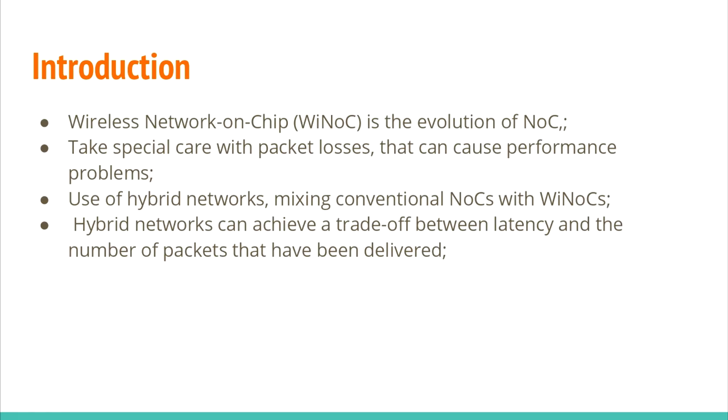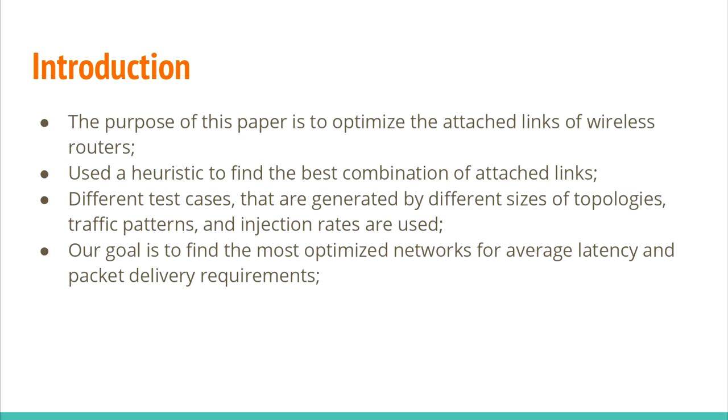Wireless network on chip is the NOC evolution. This type of network can send packets between distant routers without need to travel through several routers, only work point to point. However, this type of network has a higher packet loss rate. To try to solve this problem, hybrid networks are a solution. Mixing a conventional NOC with wireless, we can obtain a trade-off between latency and lost packets.